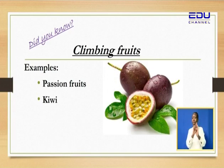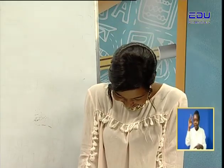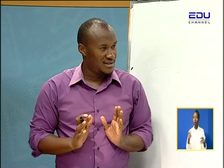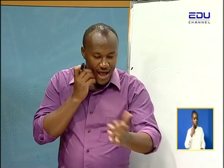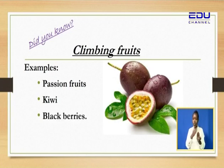Despite kiwi being a bird, we have a fruit known as the kiwi. We actually have three types of kiwi — we have the bird, we have the fruit, and then we have the shoe shining polish. I'm talking about the kiwi fruit — a very small, very delicious fruit. It's also a climbing tree, a fruit tree, so it has to be trained as well. Another one, we have the blackberries.